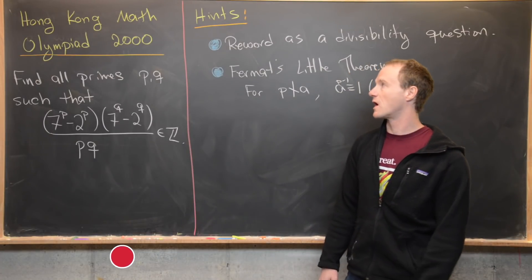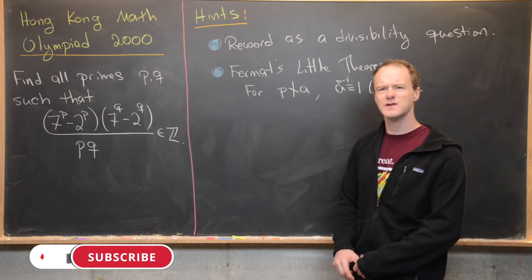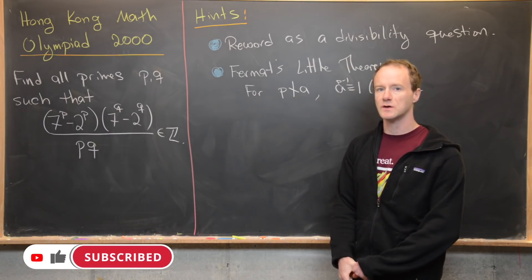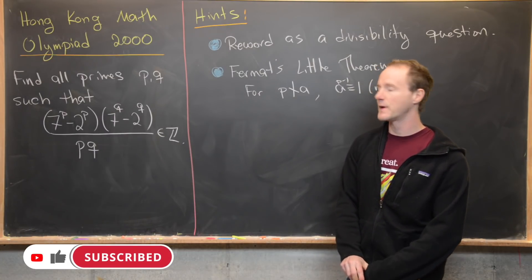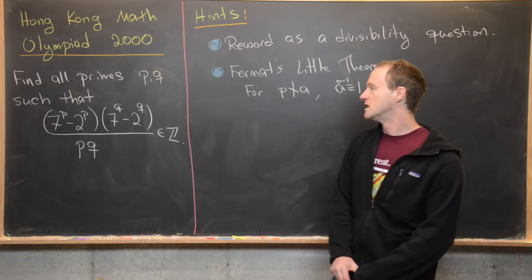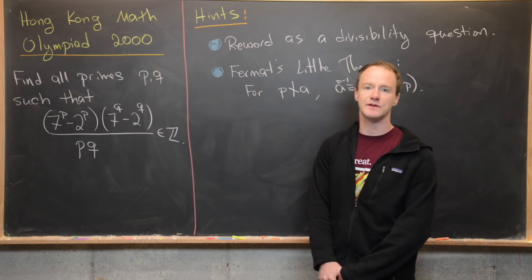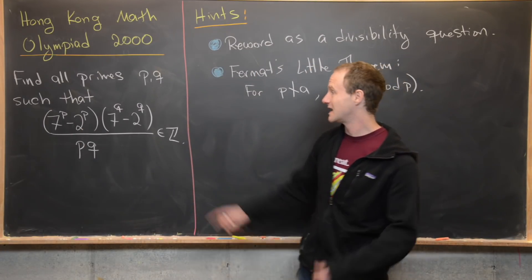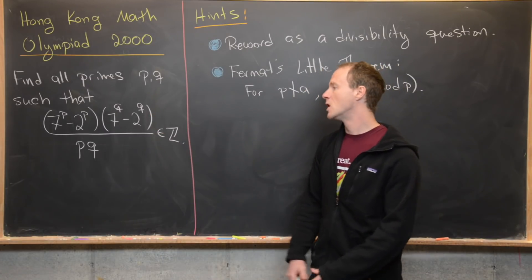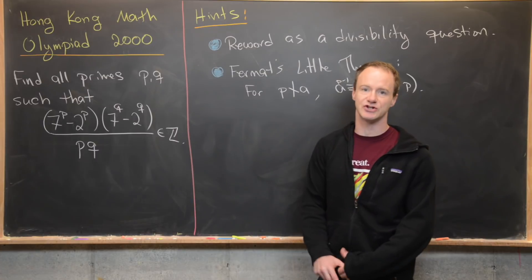Here we're going to look at a nice problem from the Hong Kong Math Olympiad from the year 2000. Our goal is to find all pairs of prime numbers P and Q such that (7^P - 2^P)(7^Q - 2^Q) over P times Q is an integer.